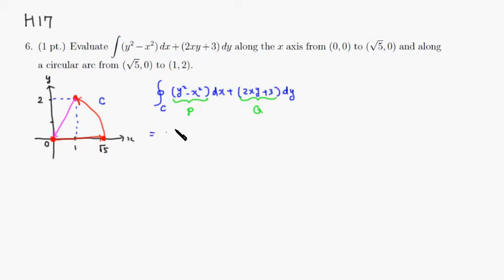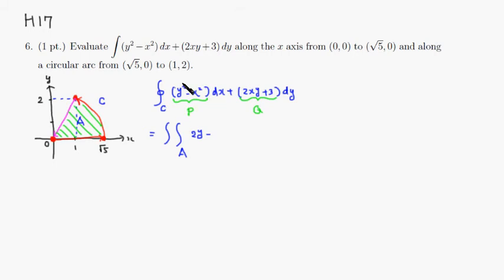This is going to equal a double integral — we have to convert to a double integral. This is the double integral over region A. We take the partial of Q with respect to x, which is 2y, minus the partial of P with respect to y, which is also 2y, giving us dx dy. That equals 0.